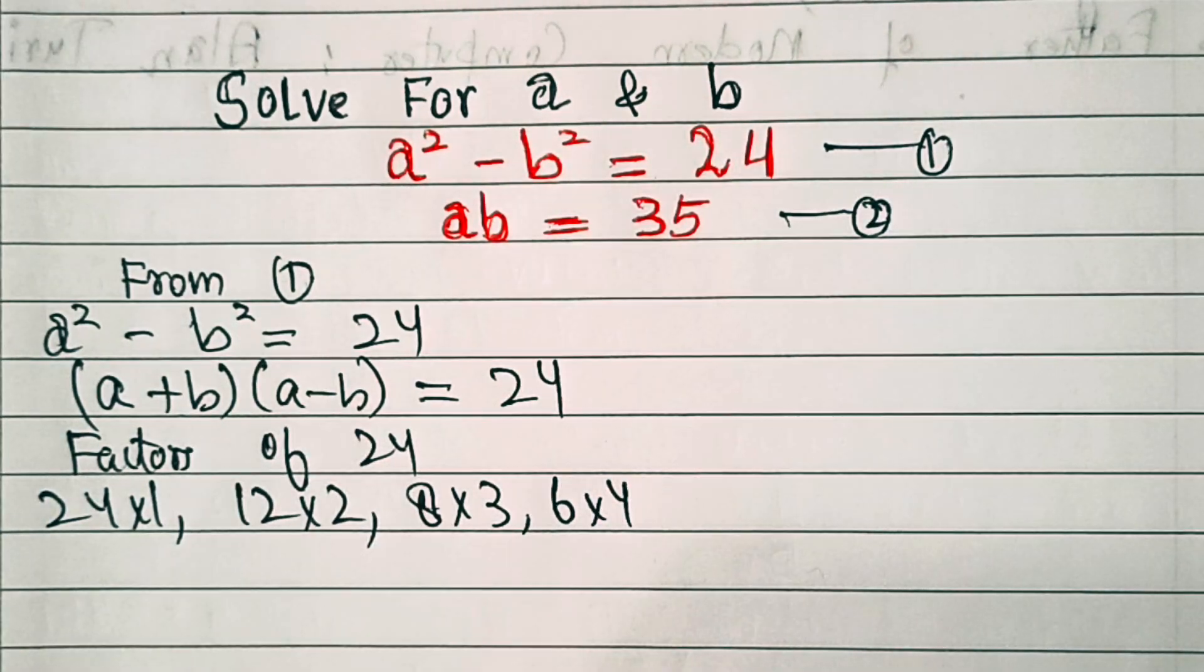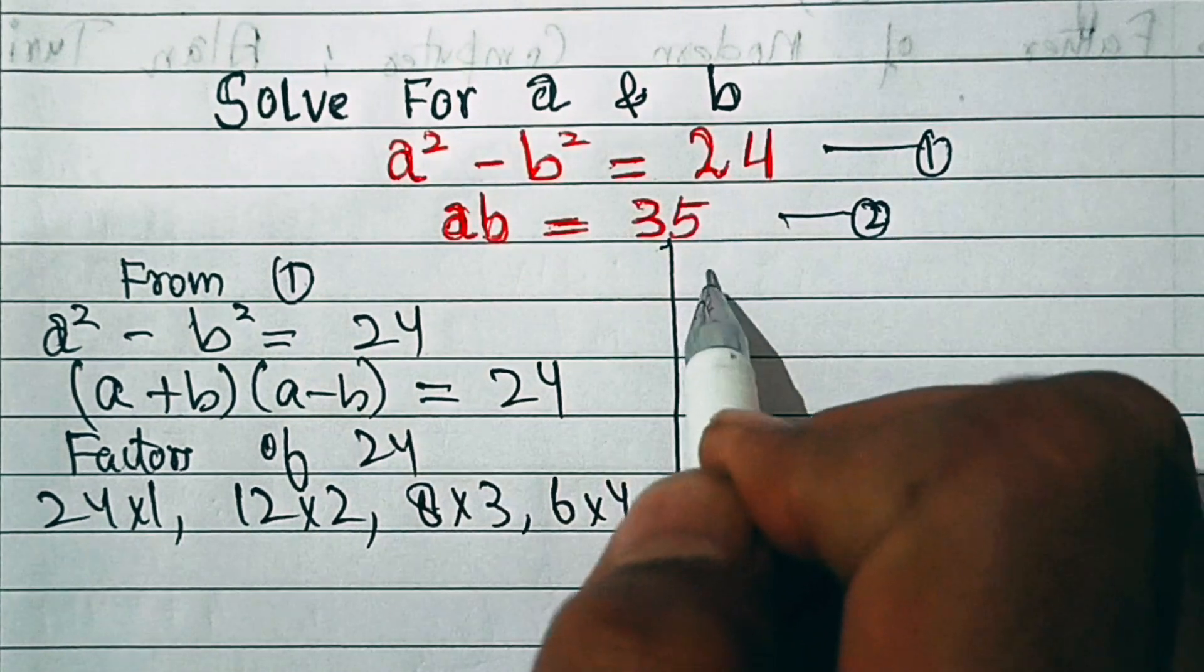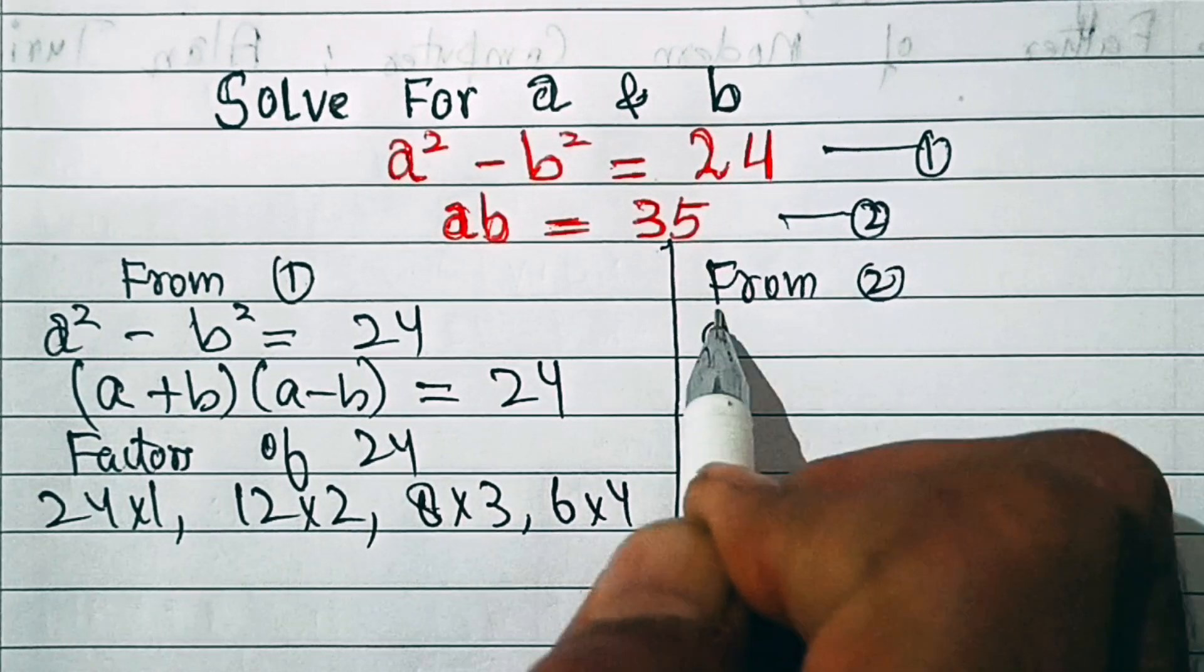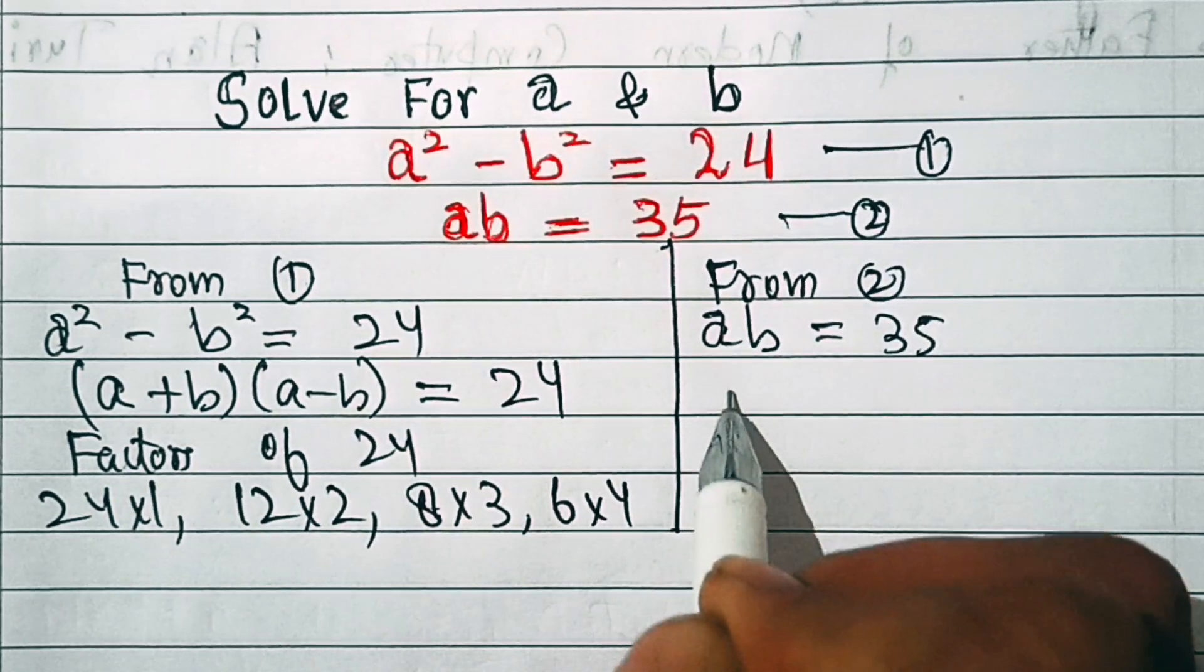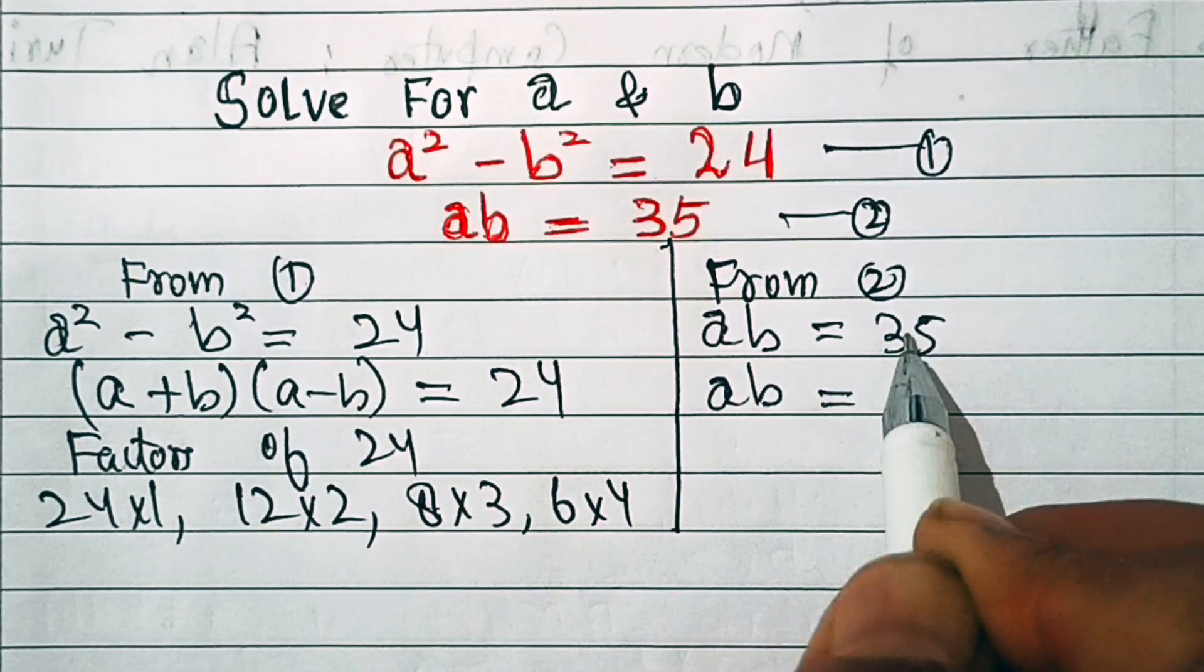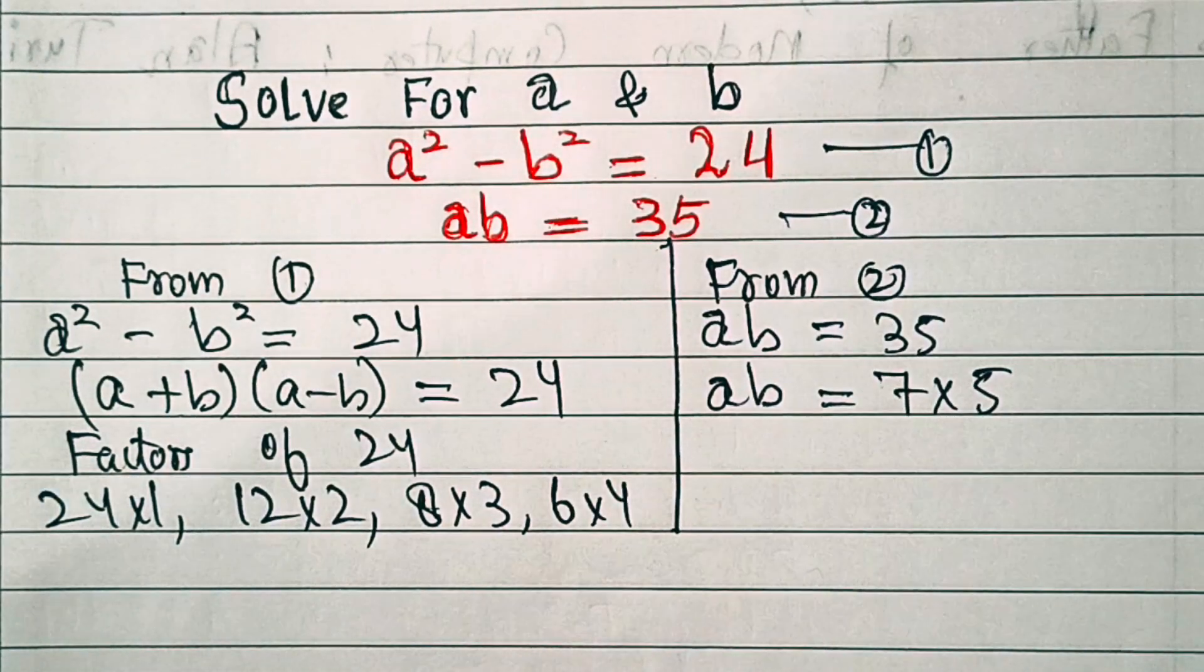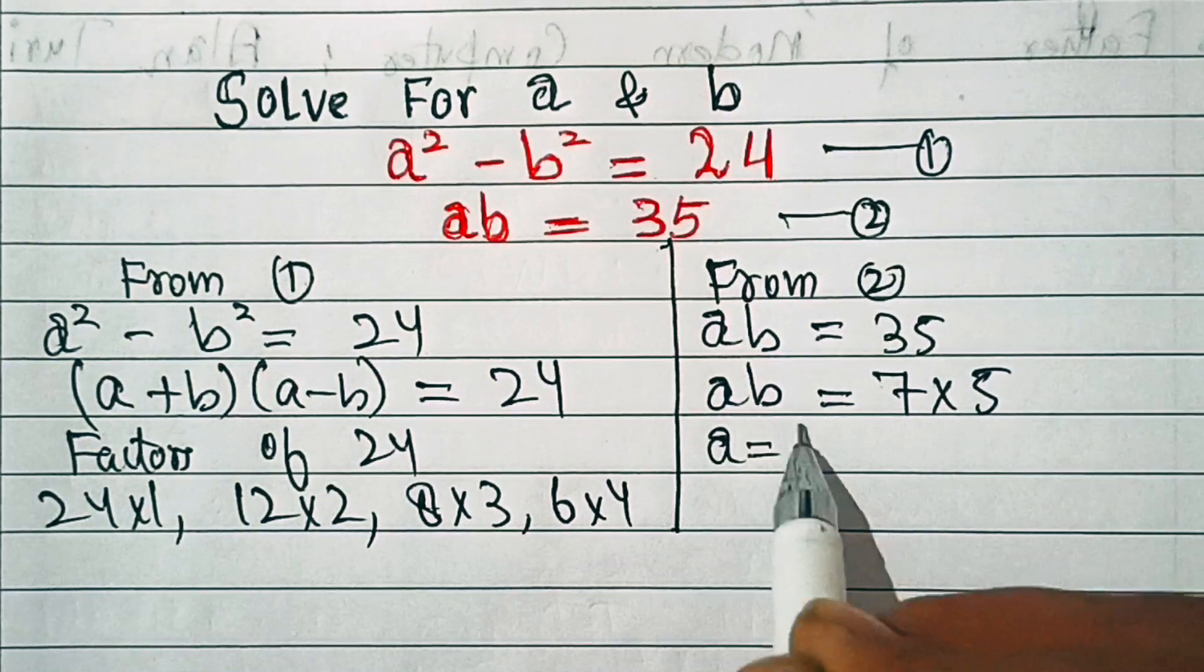For that, we'll take help from equation second. From second we have ab = 35. The only factorization of 35 is 7×5, right? So that means we can take a = 7 and b = 5.